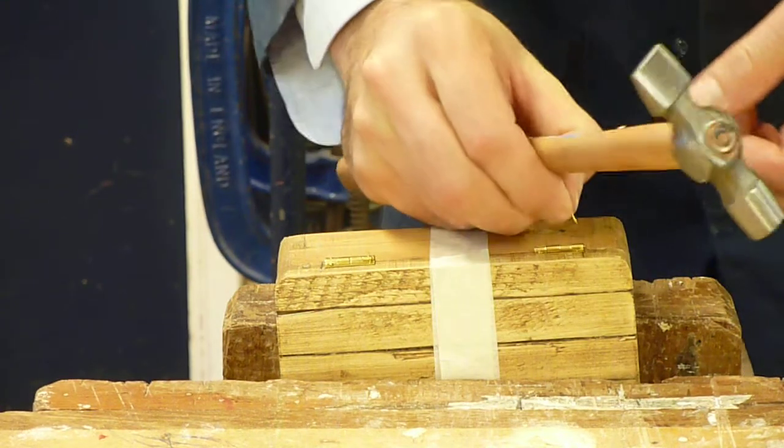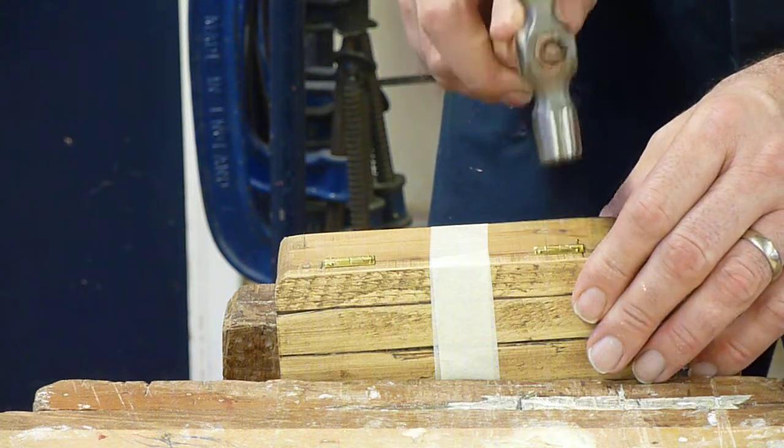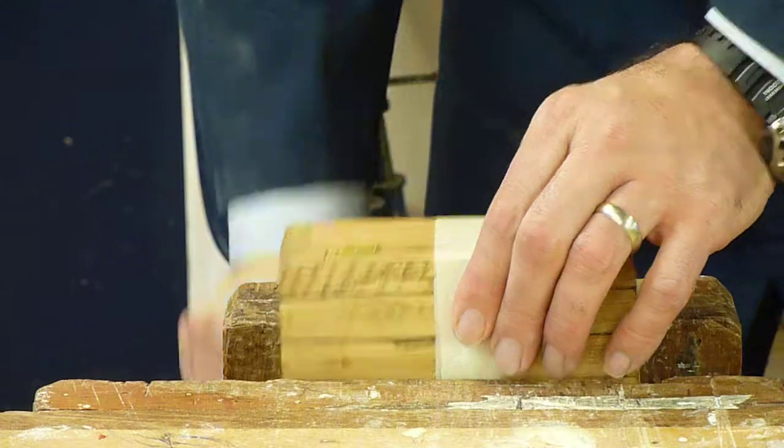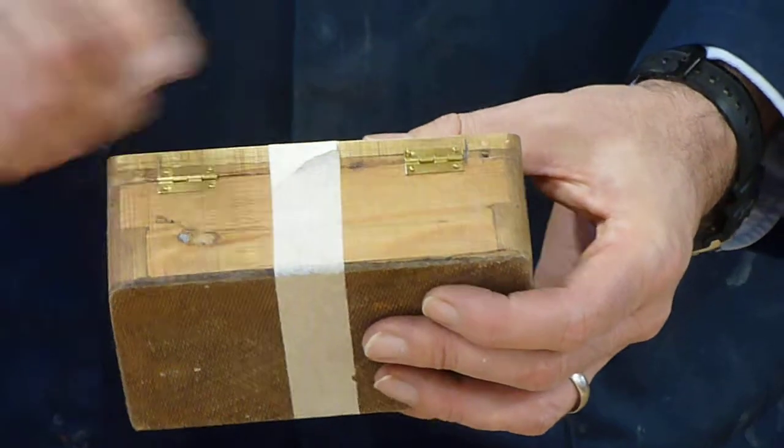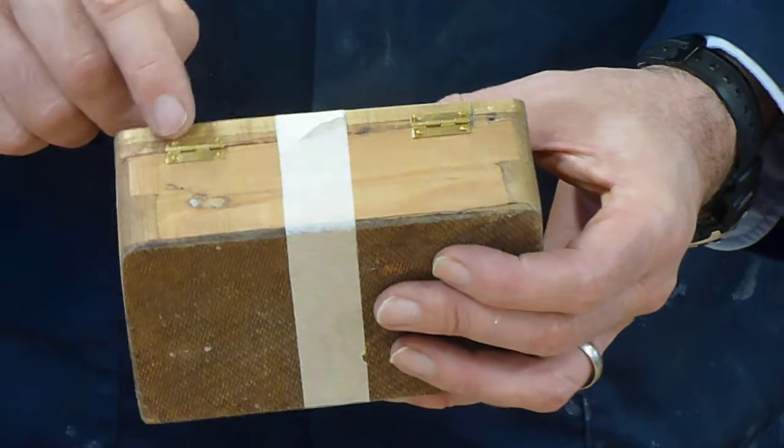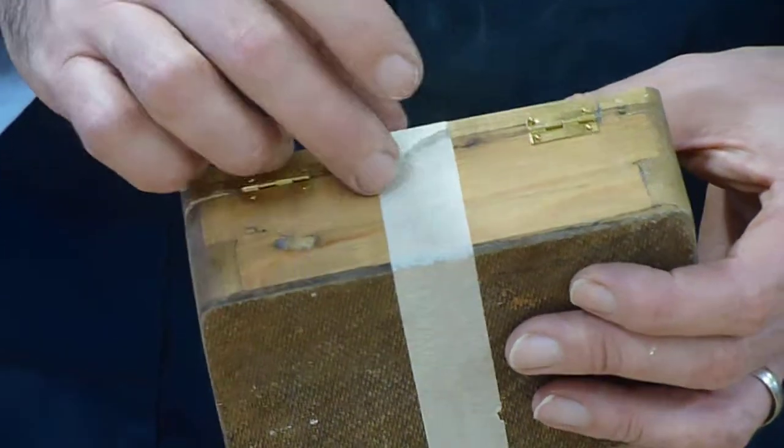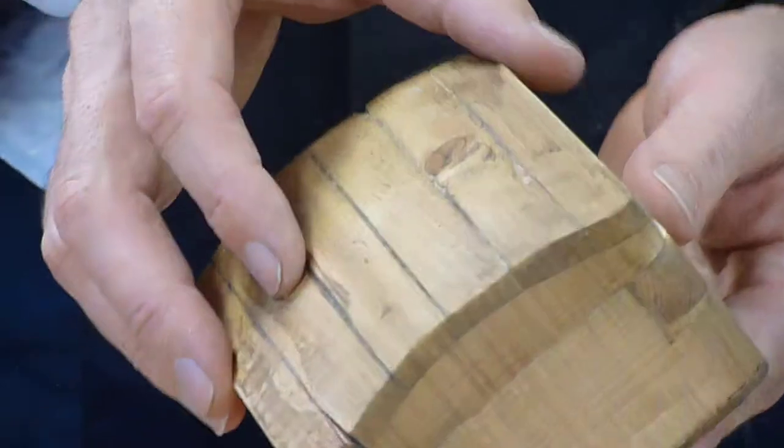If you make a mistake, use a small screwdriver and you can just lever it off. Now I've put eight pins in, four in each hinge. You can see the marks at two centimeters, 20 millimeters in, and I can take my tape off now. There's the box.